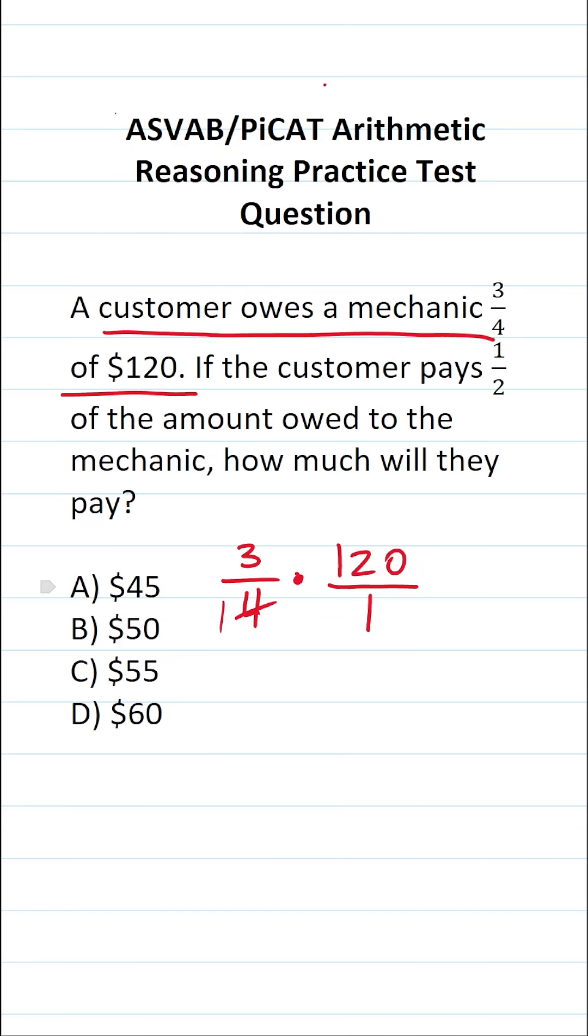Again, 4 goes into 12 three times. Therefore, 4 goes into 120 thirty times. This is 3 over 1. 3 divided by 1 is 3 times 30 over 1. 30 divided by 1 is 30. 3 times 30 is 90. Again, 3 times 3 is 9. Therefore, 3 times 30 is 90. All right, so we know the customer owes the mechanic $90.